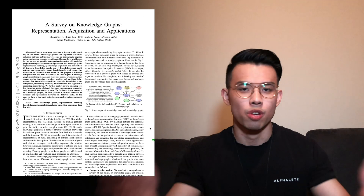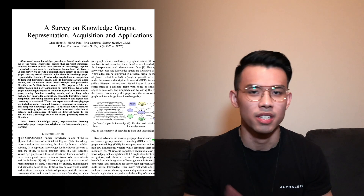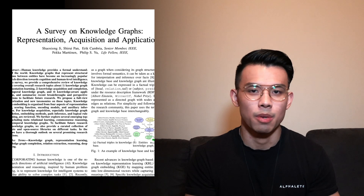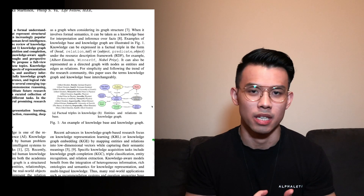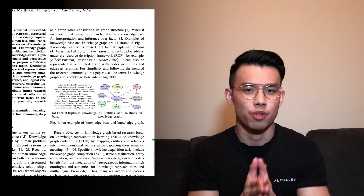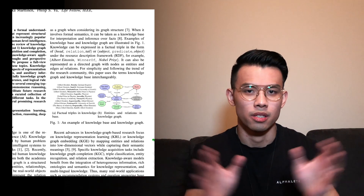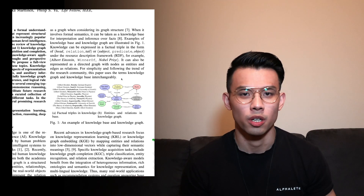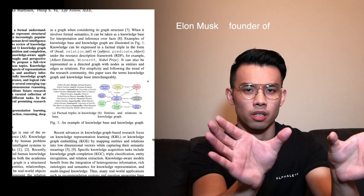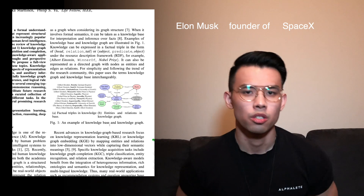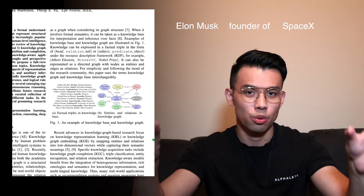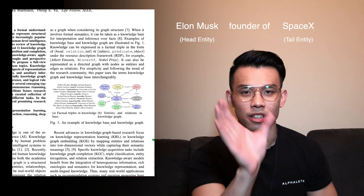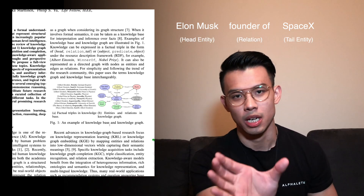A knowledge graph is a structured representation of facts, and facts are made up of entities and relations. Entities can refer to real life objects such as people or organizations. Relationships capture the connections between two different entities. For example, Elon Musk is the founder of SpaceX — Elon Musk and SpaceX are two different entities, and 'founder of' is a relation type.